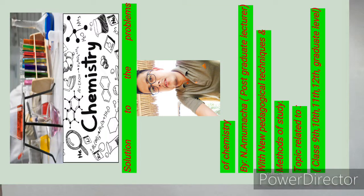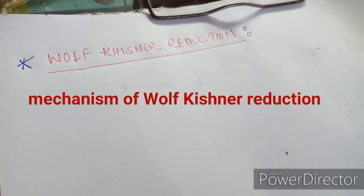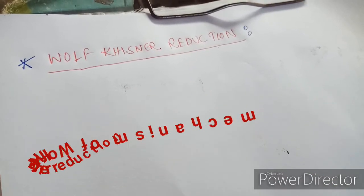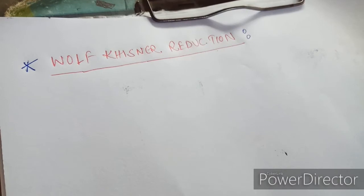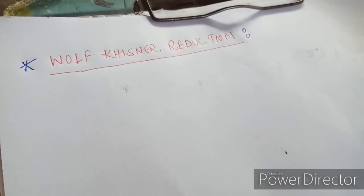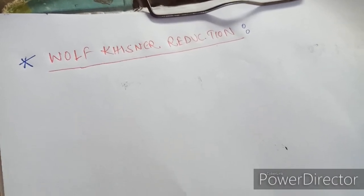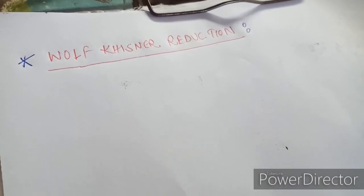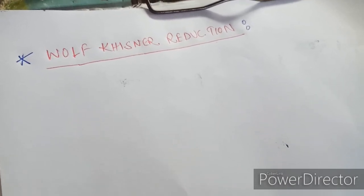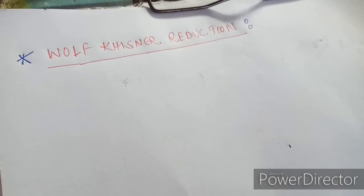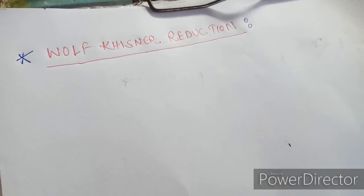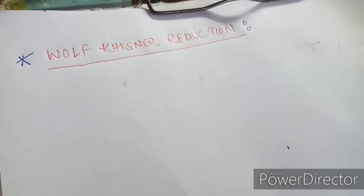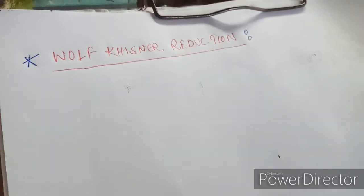Good morning everyone. Today's topic will be Wolff-Kishner Reduction. So today we will study what is Wolff-Kishner Reduction and the mechanism of this reaction. Wolff-Kishner Reduction is the reduction of aldehydes or ketones to their corresponding hydrocarbons, by reacting them with hydrazine and a strong base in a high boiling point solvent such as ethylene glycol.